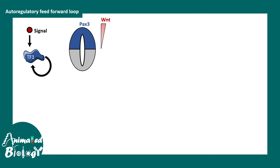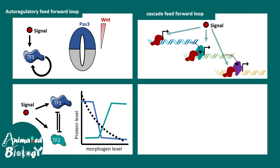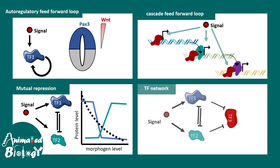An example of this kind of transcription factor is PAX3, which is responsive to the morphogen Wnt and is found in neural tube development. There could also be a cascade of feed-forward loops, where the product of each step helps drive the next, meaning a transcription factor cascade regulates a gene network loop. Additionally, there could be mutual repression, where one transcription factor inhibits the production of another, and this kind of mutual repression loop can create sharp tissue boundaries.